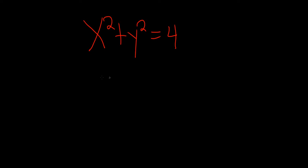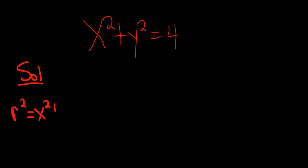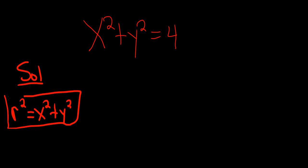In this problem we have a rectangular equation and we have to convert it to polar and then give a rough sketch. The formula that we're going to use is r squared equals x squared plus y squared. This is one of the formulas that is totally worth knowing. In this case, the whole left-hand side is simply r squared.